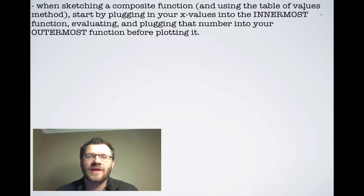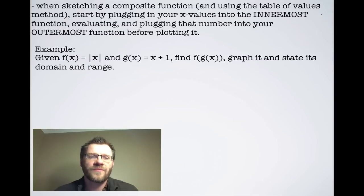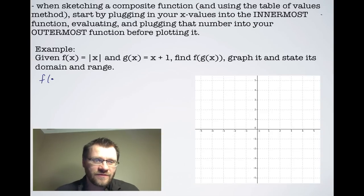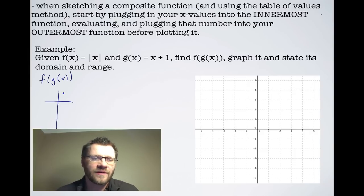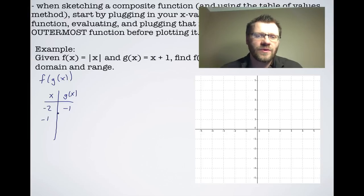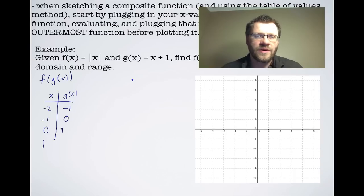When sketching a composite function using the table of values method, you start by plugging x values into the innermost function, evaluating, then plugging that result into the outermost function before plotting. Given f(x) = |x| and g(x) = x + 1, find f(g(x)) and graph it. Plugging in x = -2, -1, 0, 1, 2 into g(x) gives -1, 0, 1, 2, 3 respectively — increasing by 1 each time.